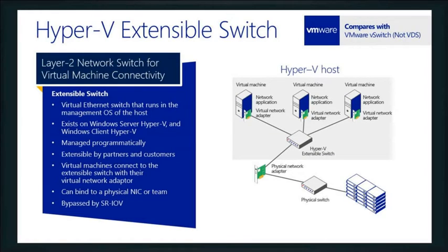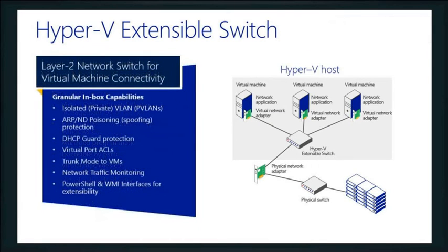Understand we're talking about just a standard switch environment — this is just what's built into Hyper-V itself. What makes us different is how we can do the same kind of stuff. We do bind to a physical NIC or a team. We can bypass it if we're using SR-IOV. We can do the same kinds of things that VMware does, but we approach it in a very different way.